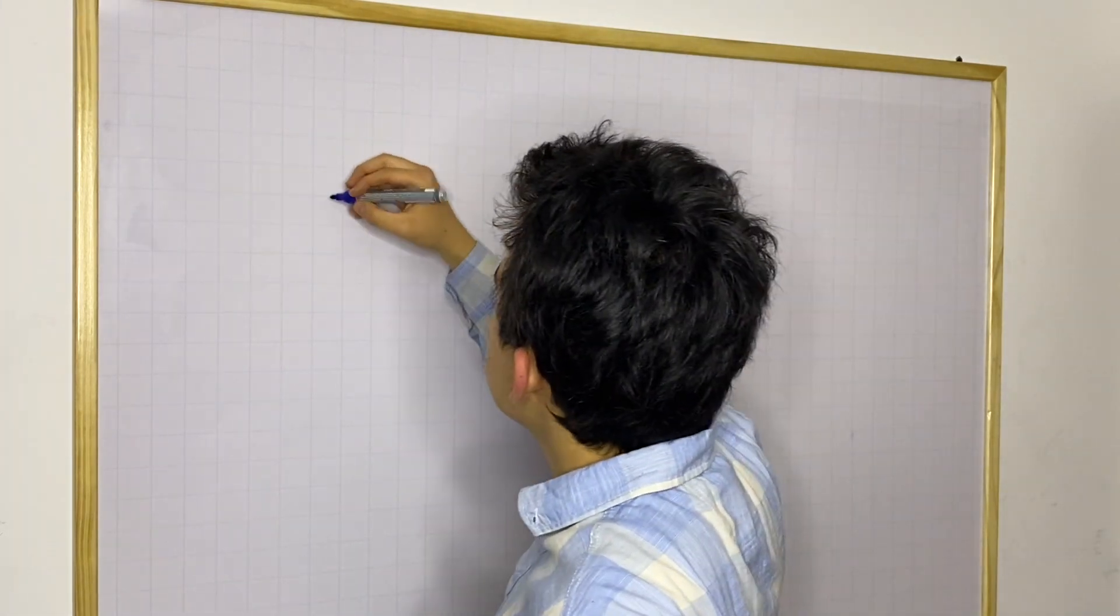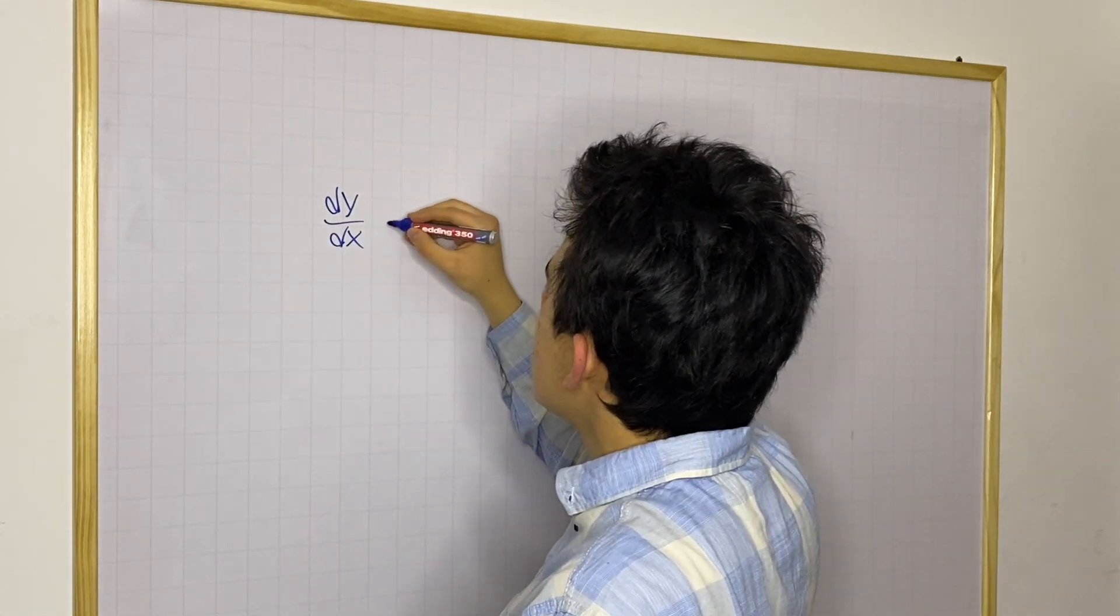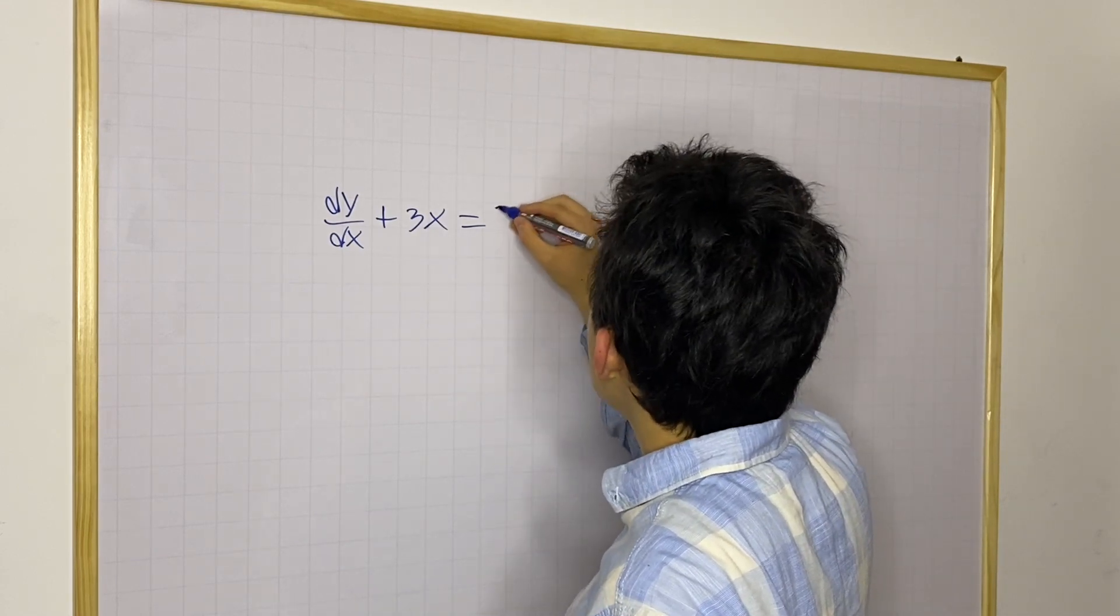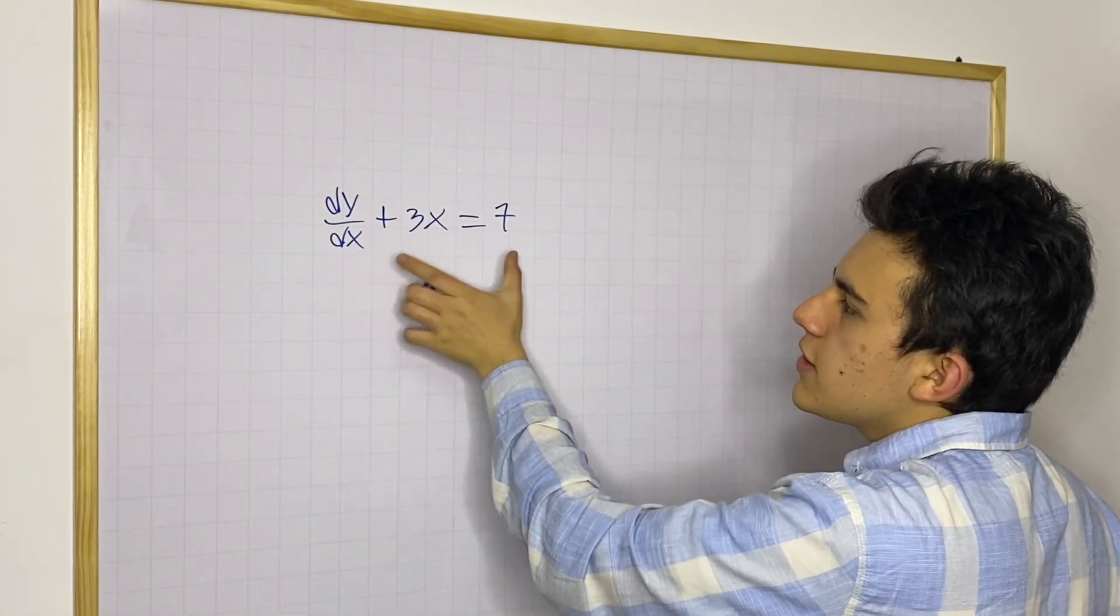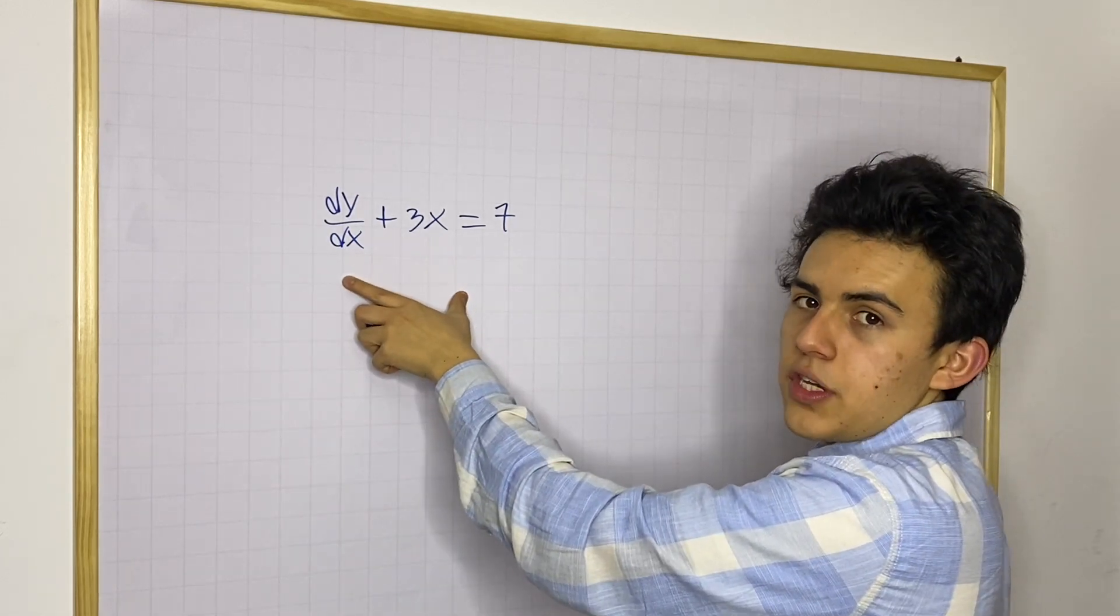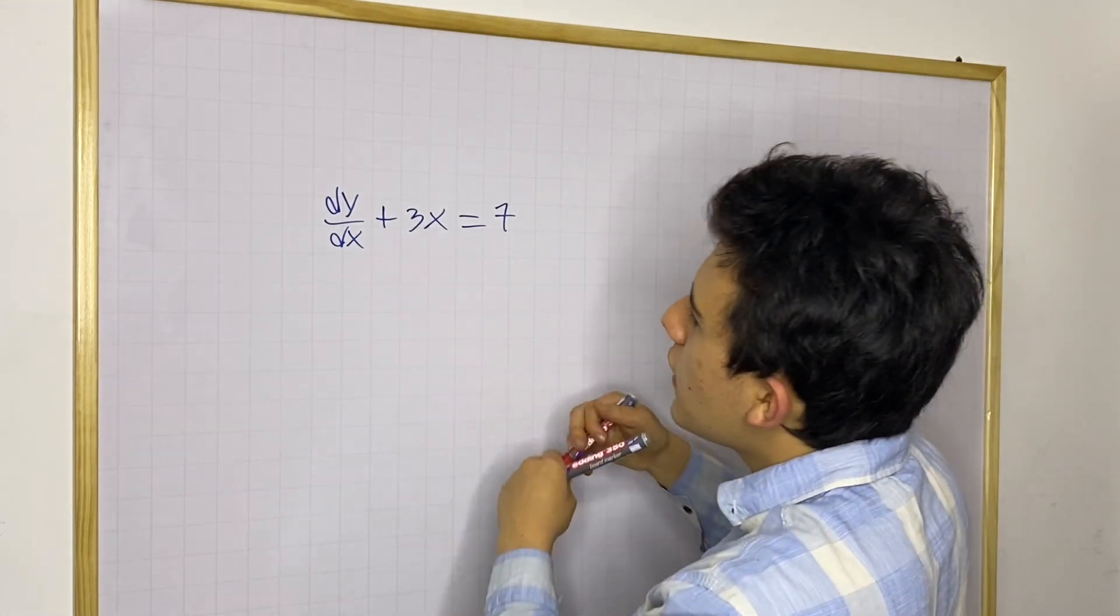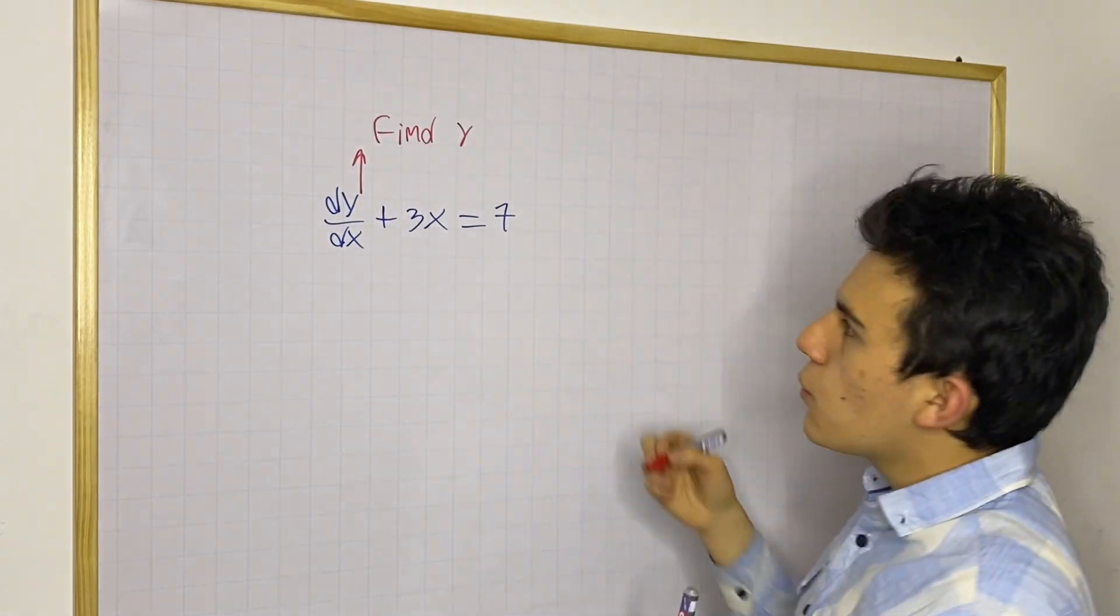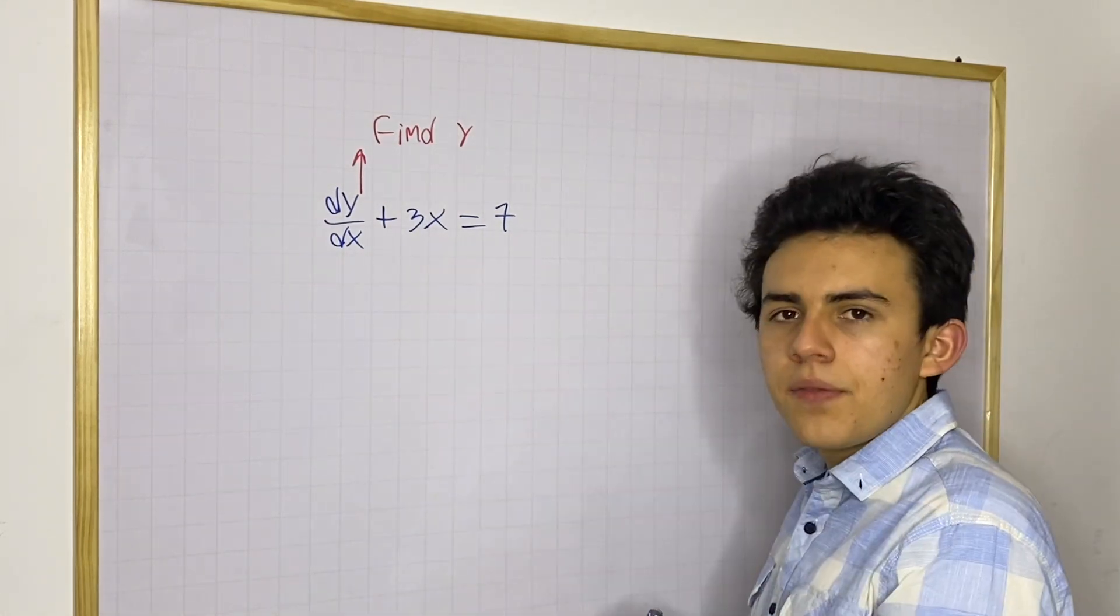Let's say we have the following example. If we have dy over dx and let's say we're going to add 3x and this is going to be equal to, let's say, 7. Now you might be wondering, what is this? This is something that you may not be familiar with just yet, but this is a differential equation. And now the solution to a differential equation in this case is going to be to find y. We need to find y. If we find how much y is, we have solved this differential equation.